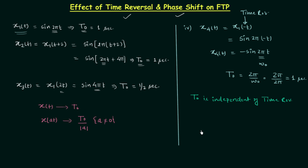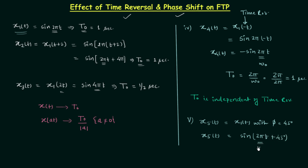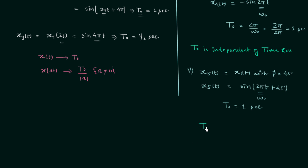Let's take the fifth example in which we will perform the phase shift. The signal x5(t) is obtained by introducing a phase shift of 45 degrees in signal x1(t). So the new signal x5(t) is simply equal to sin(2πt + 45°). In this case also ω₀ is equal to 2π, so the fundamental time period is again equal to one second. Therefore there is no effect of phase shift on the fundamental time period — t₀ is independent of phase shift.